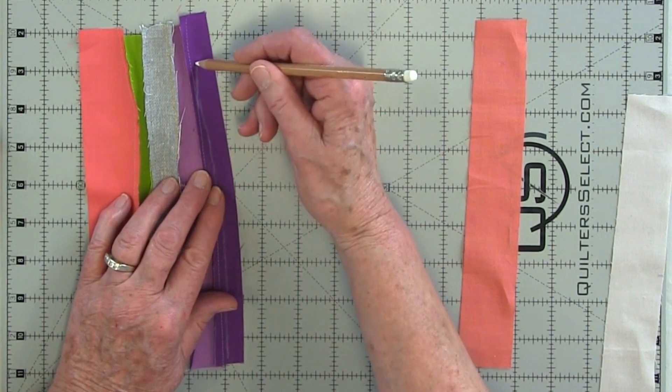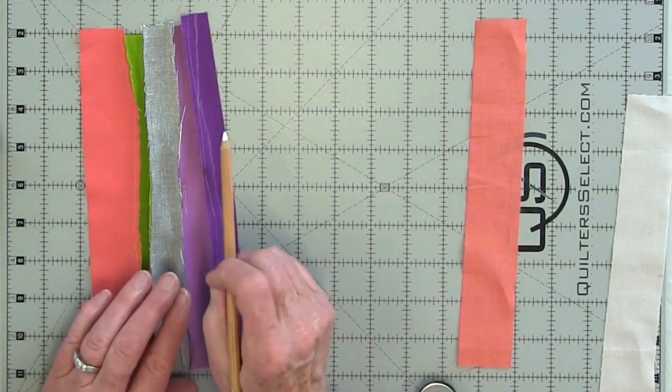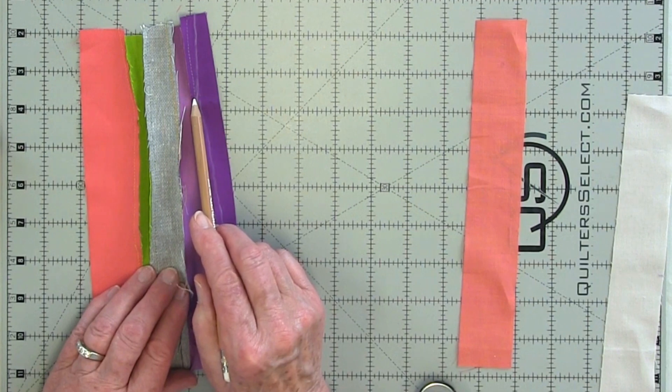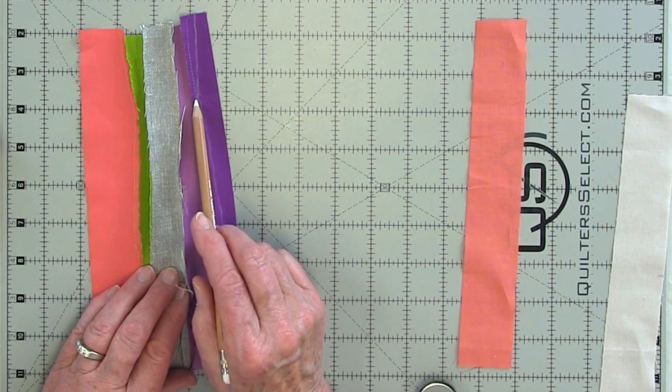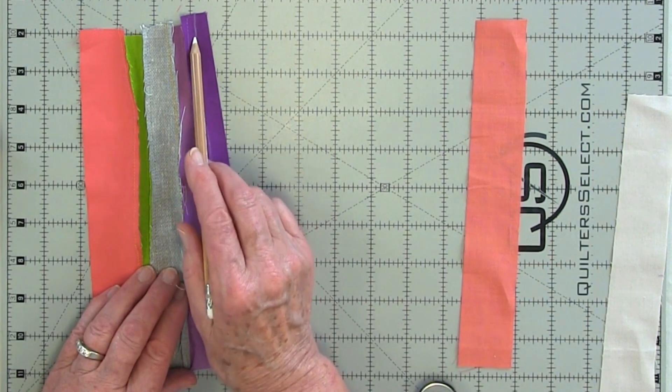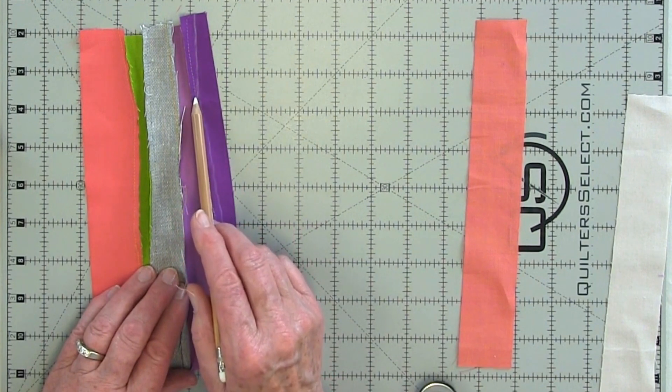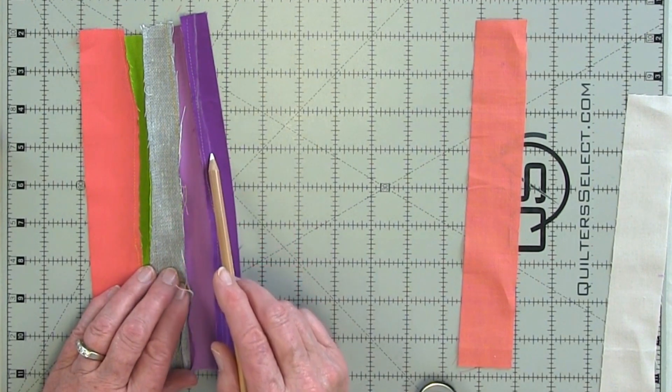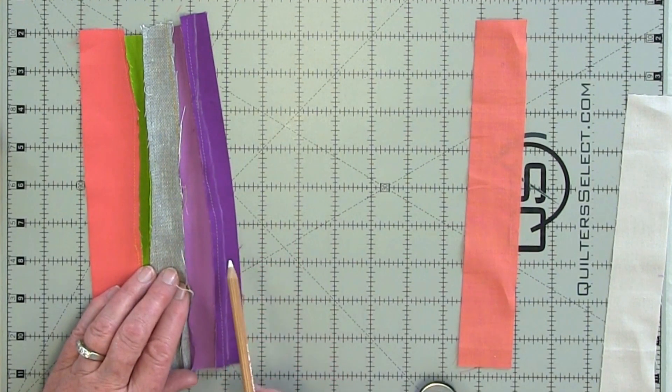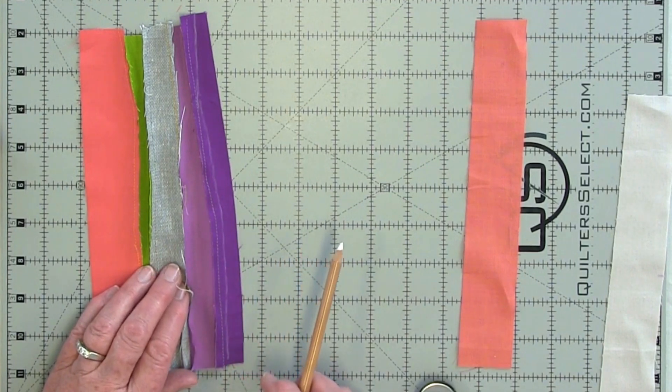What that will mean when you stitch, you'll be stitching like this along the chalk line. Then you'll stitch right beside that last seam. Then you'll come back out and it creates kind of a disappearing strip.